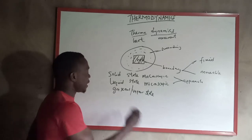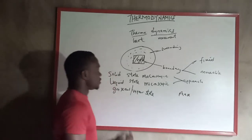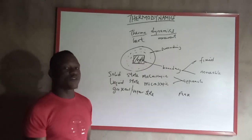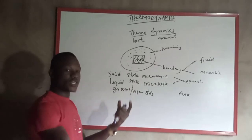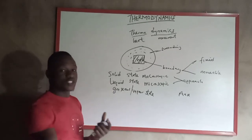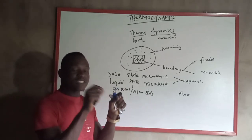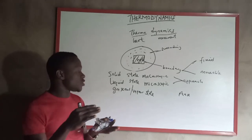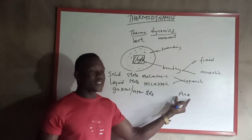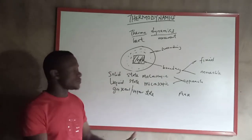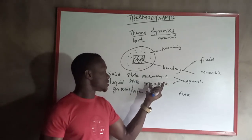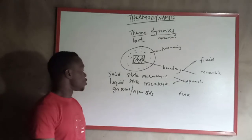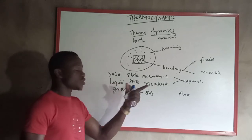For the microscopic approach, we talk about solid phase, liquid phase, and gaseous phase — they are the same concepts but viewed differently. For states (macroscopic), we are talking about the system as a whole — is it solid, liquid, or gaseous? For phase (microscopic), we are talking about the molecules of the system — are the molecules in solid phase, liquid phase, or gaseous phase? So for microscopic we talk about phase, while for macroscopic we talk about states.